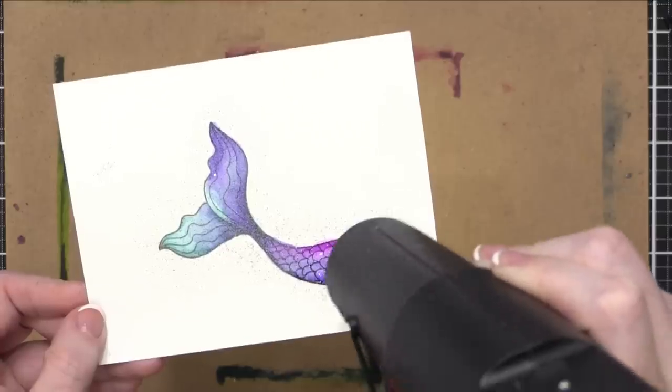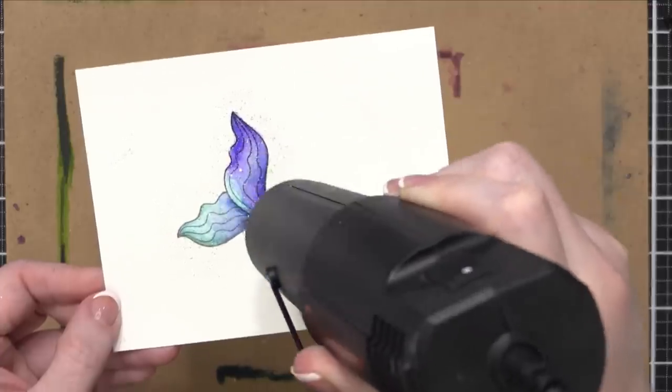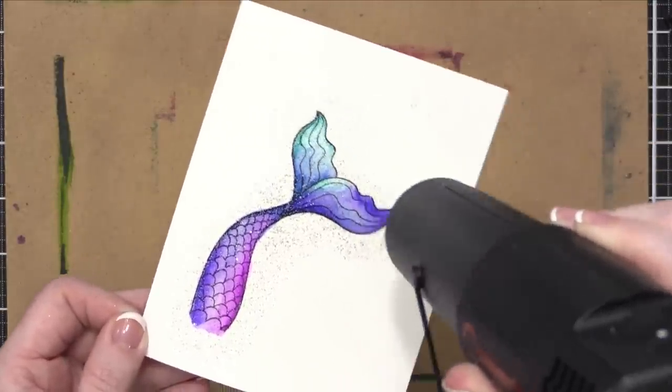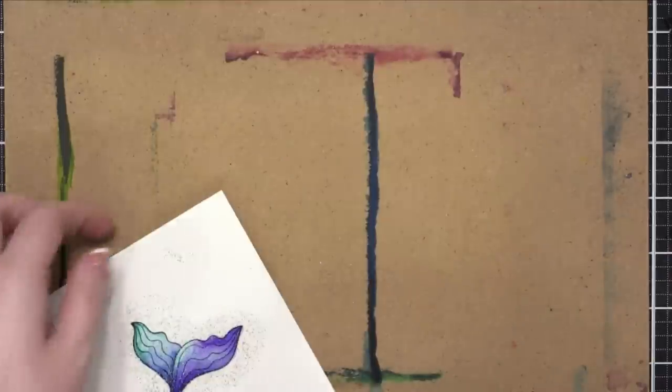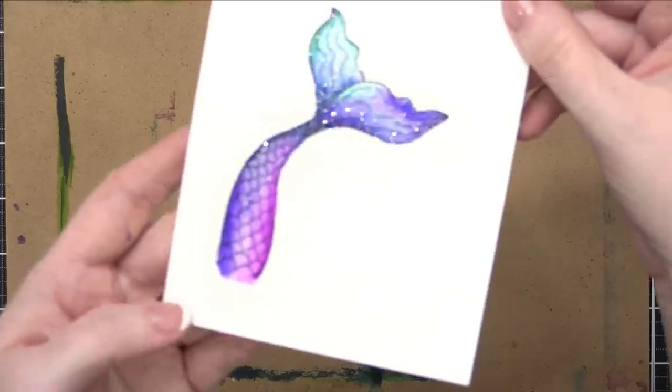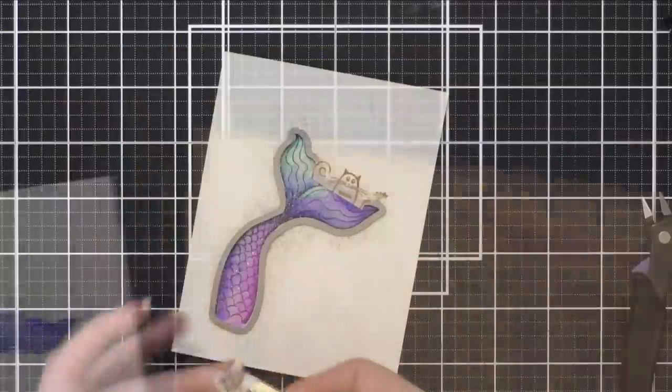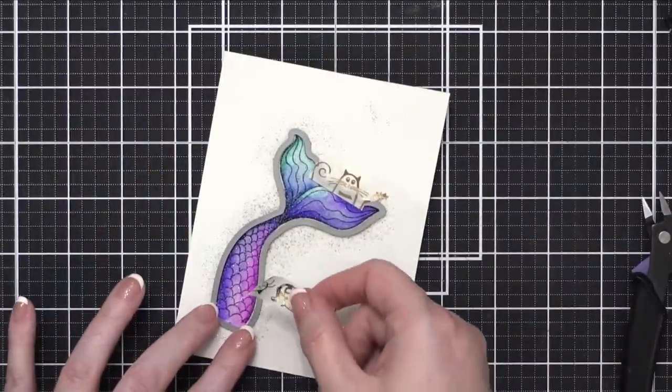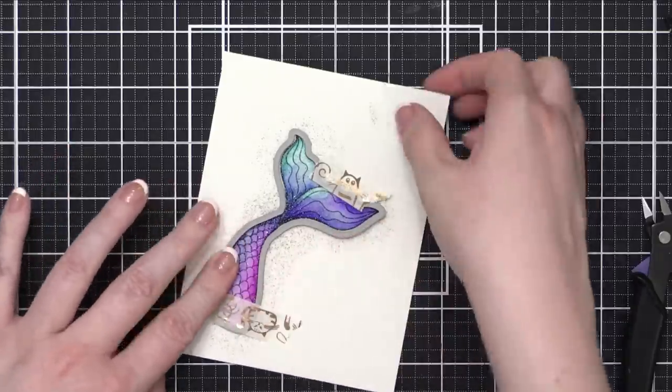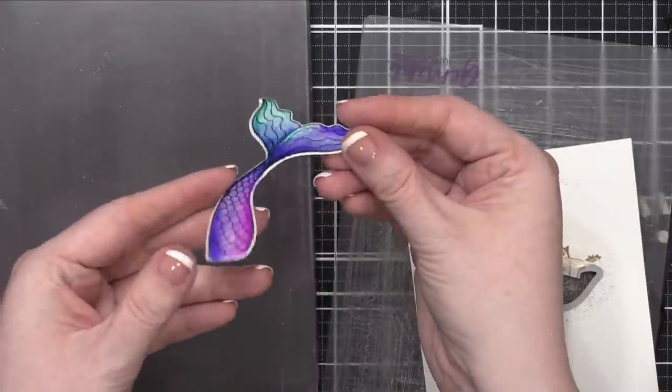The thing I love about this embossing powder in particular, or just clear embossing powders, is you can really see when it's melted, and it also intensifies and saturates the color underneath. I like that it kind of brings back the vibrancy that this watercolor had when it was wet. You can see that beautiful sparkle that comes with that. You get the sparkle from the glitter, and then also the shine from the embossing powder. I used the coordinating dies to cut out this mermaid tail. Just ran that through my Gemini Junior die cutting machine, and I'm left with a perfectly cut out tail piece.